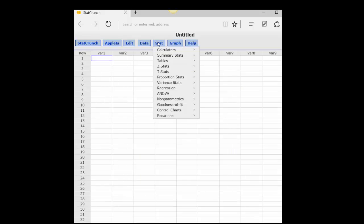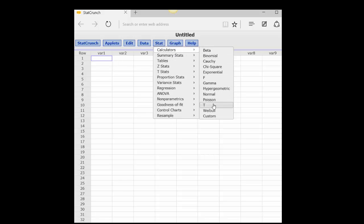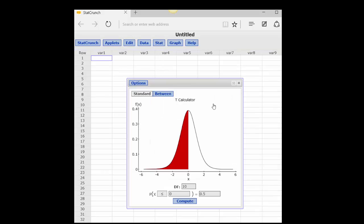Okay, let's do a t-test. Again, I'm going to calculator, down to t, and here's our t-calculator. And we've got the standard again. We want either a left-tail or right-tailed test. This time, we have to know the degrees of freedom.